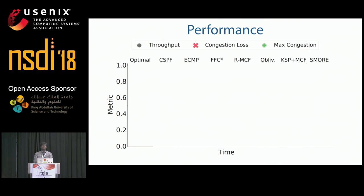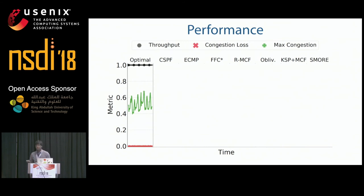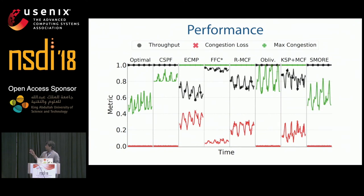Looking at performance on Facebook's wide area network in terms of throughput and maximum congestion: optimal MCF routed 100% of traffic with maximum link congestion varying between 40% and 65% in a diurnal pattern. With the exception of CSPF, Oblivious, and SMORE, almost every other TE system saturated at least one link, leading to loss due to congestion. SMORE remained closest to optimal, with maximum congestion within 16% of optimal on average.